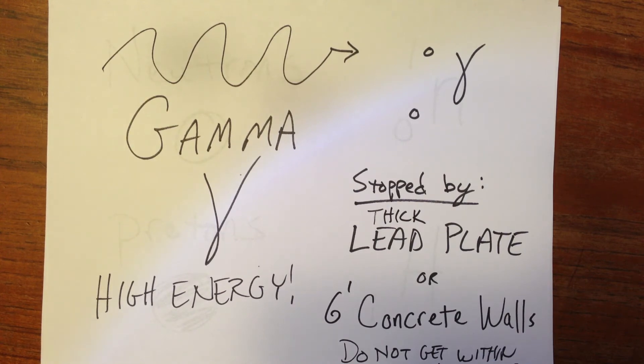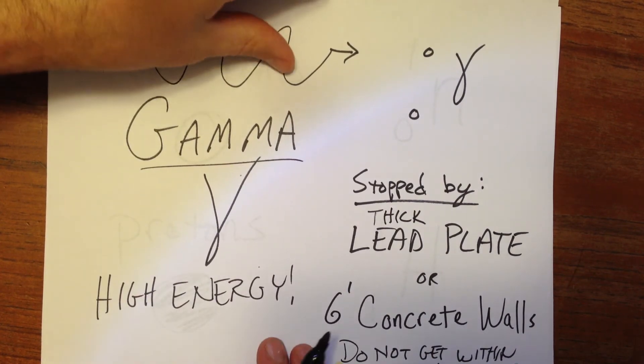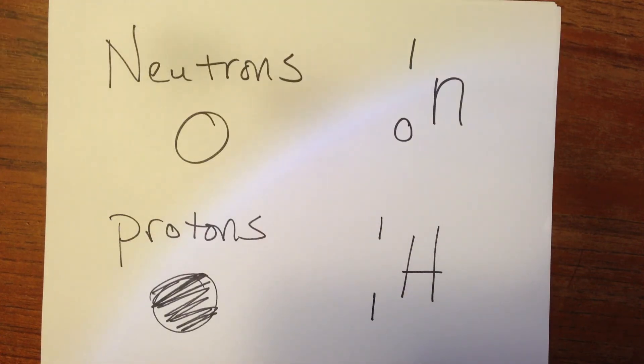A lot of, when nuclear bombs go off and you hear that people die from the radiation, this is what they're talking about. They're talking about these gamma waves. And these are a byproduct of certain kinds of nuclear reactions. Now we talked about alpha, beta, and gamma before.